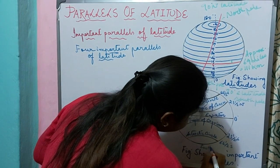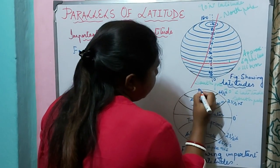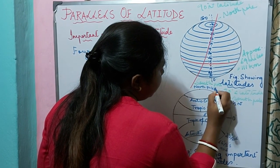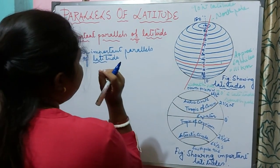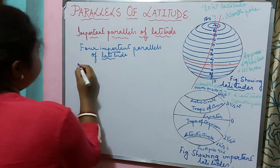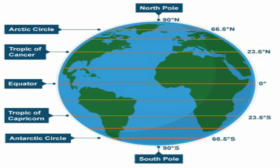The South Pole is at 90 degree south and the North Pole is at 90 degree north. So which are the important parallels of latitude besides the North Pole, South Pole, and equator? Number one: the Tropic of Cancer, located at 23 and a half degrees north latitude. Number two: the Tropic of Capricorn, located at 23 and a half degrees south latitude. Number three: the Arctic Circle, located at 66 and a half degrees north latitude. Number four: the Antarctic Circle, located at 66 and a half degrees south latitude.